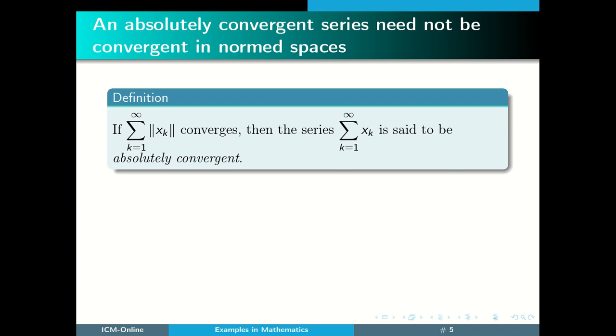Let us recall what is meant by absolutely convergent series. If summation k equals 1 to infinity norm of xk converges, then the series summation k equals 1 to infinity xk is said to be absolutely convergent.